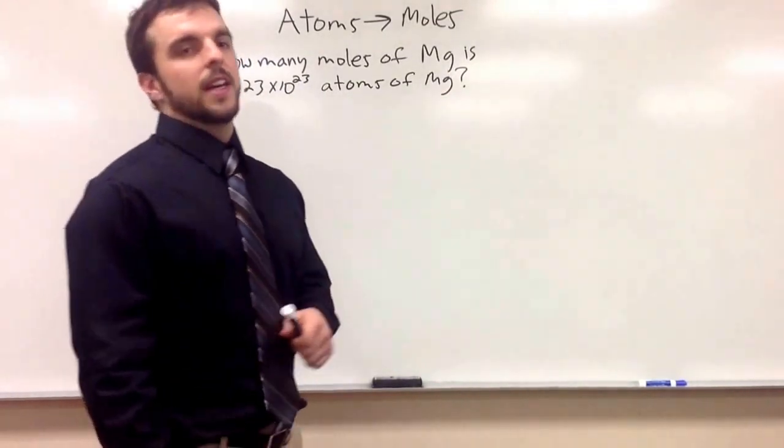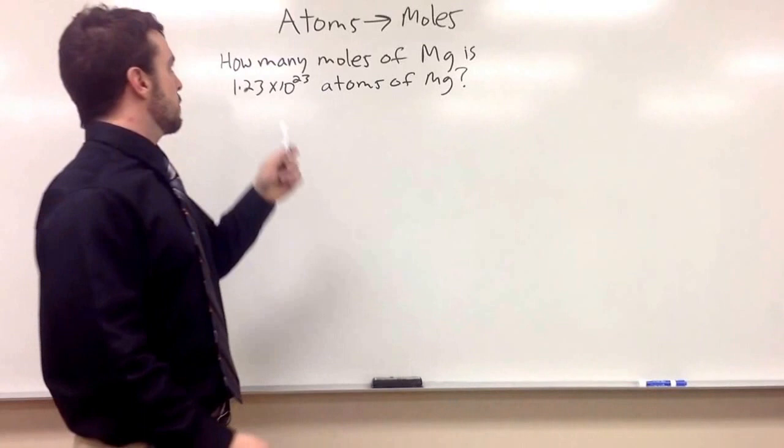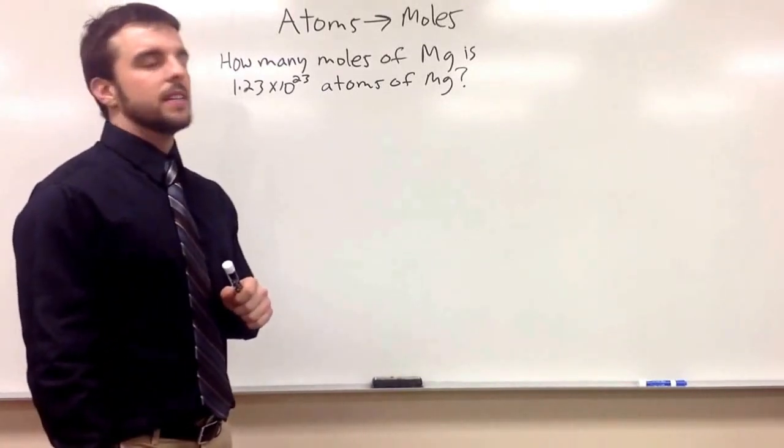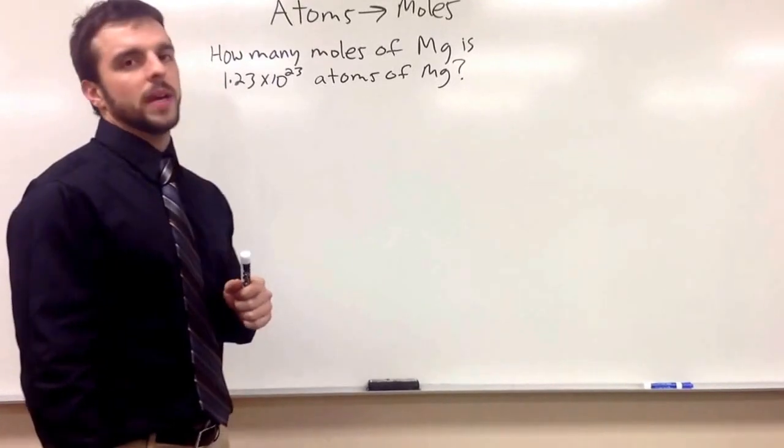Alright guys, we started stoichiometry and today I'm going to show you how to convert from atoms to moles. So here's the first problem. How many moles of magnesium is 1.23 times 10 to the 23rd atoms of magnesium.